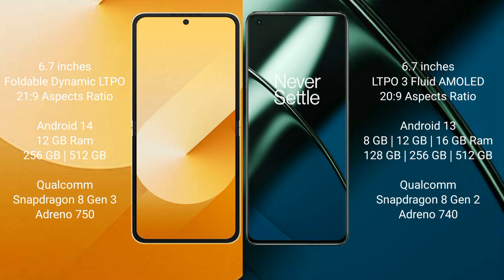The Samsung Galaxy Z Flip 6 runs on Android 14, while the OnePlus 11 runs on Android 13. The Samsung Galaxy Z Flip 6 comes with 8GB or 12GB of RAM and 256GB or 512GB of internal storage, powered by the Qualcomm Snapdragon 8 Gen 3 processor.